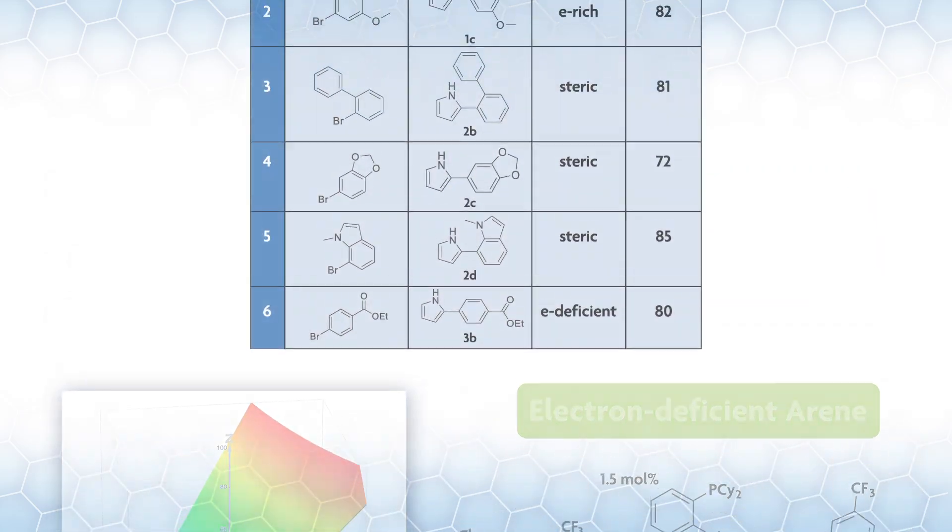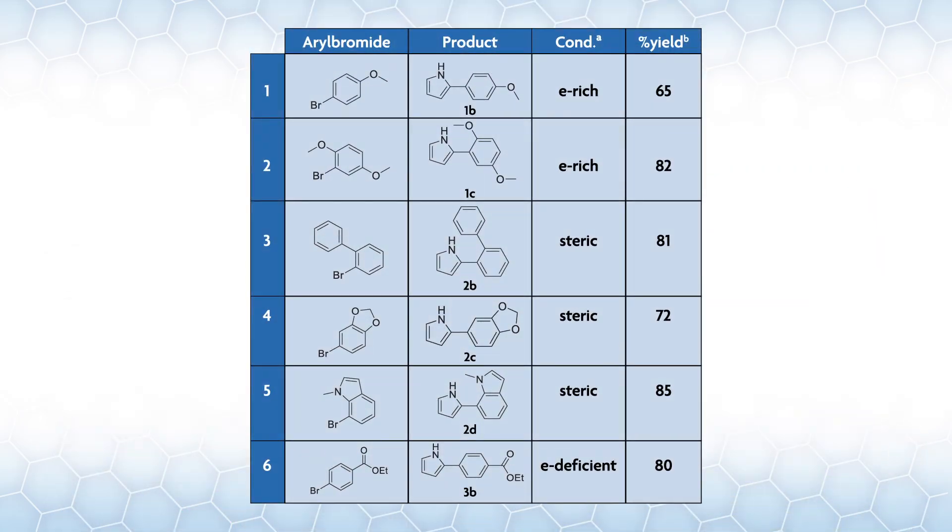The final thing Gunner did was apply these conditions to some other substrates with various sterics and electronics. He used the optimized conditions for the electron rich, electron deficient, and sterically large depending on the substrate and got good yields across the board.